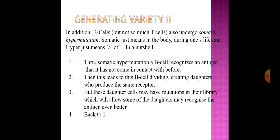In addition, B cells also undergo somatic hypermutation — somatic means in the body, and hyper means a lot. Through somatic hypermutation, a B cell recognizes an antigen it has not encountered before. This leads to the B cell dividing and creating daughter cells that produce the same receptor, but these daughter cells may have mutations that allow some of them to recognize the antigen even better.